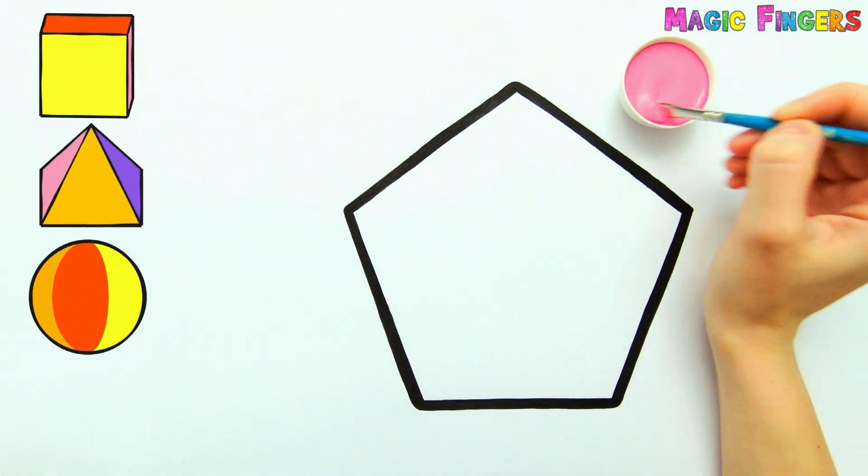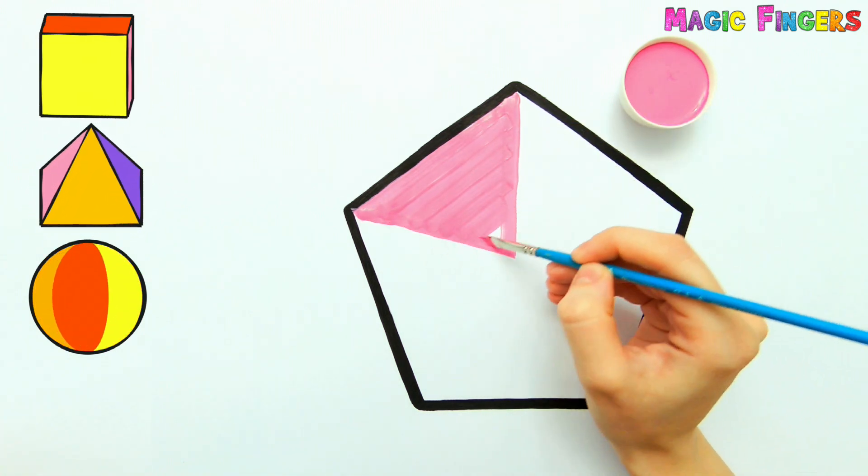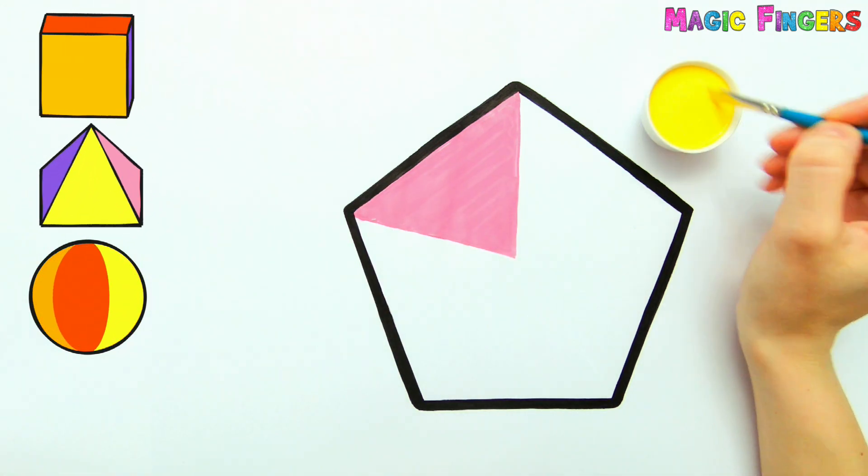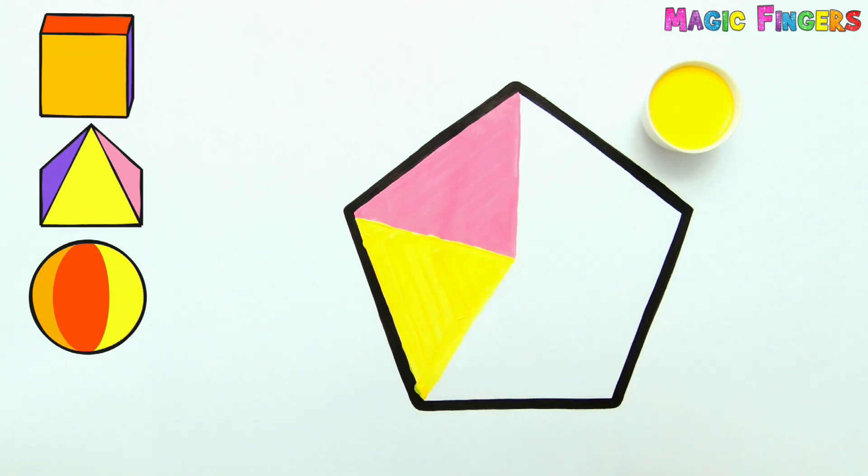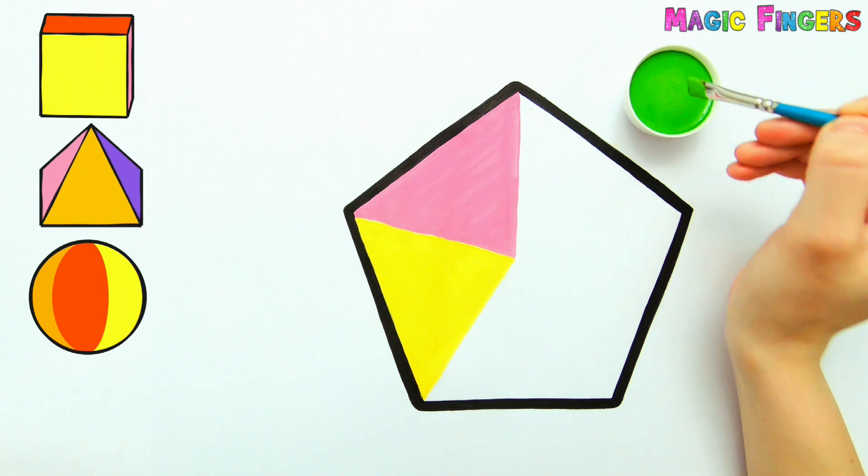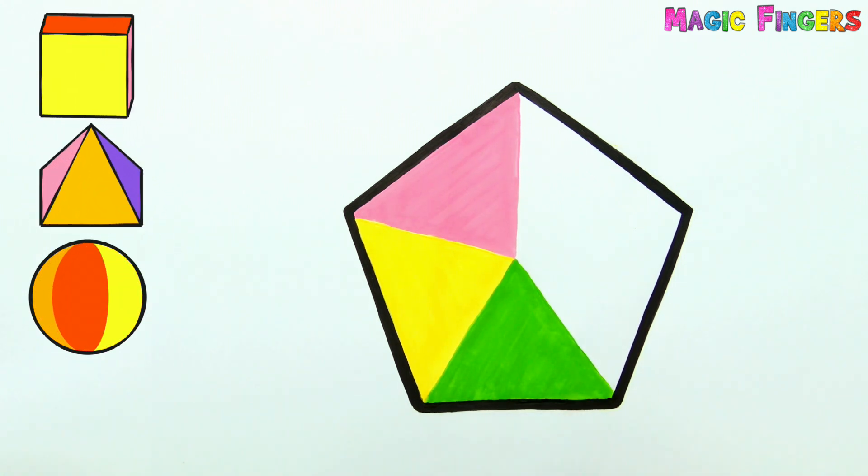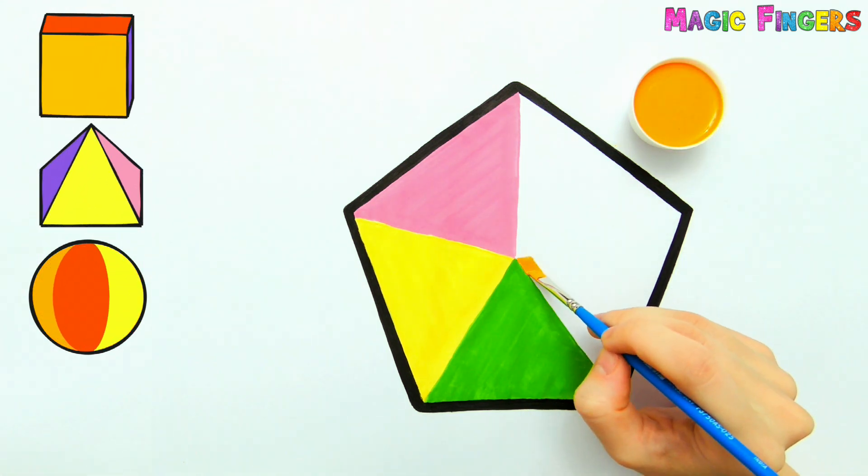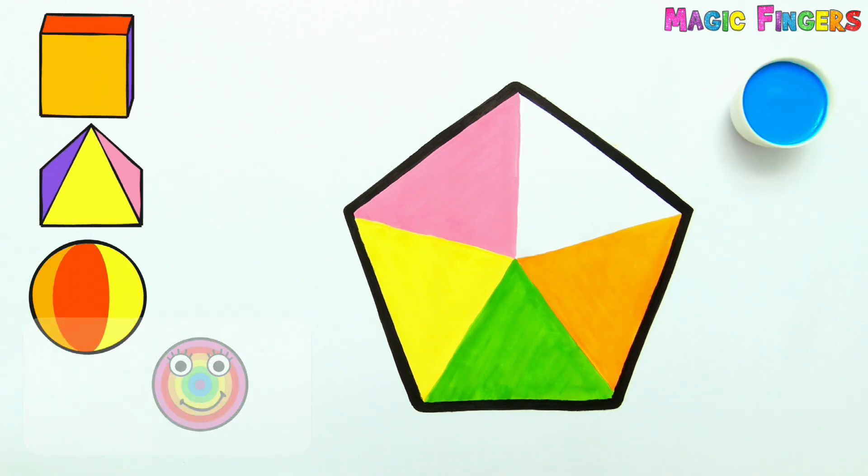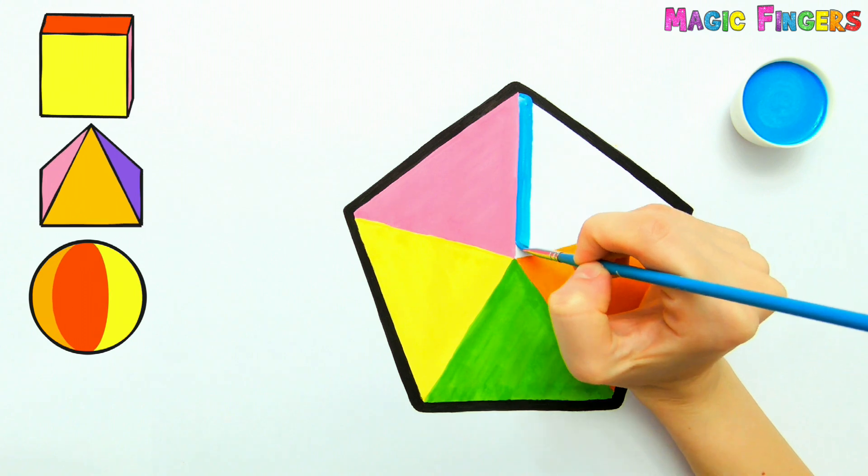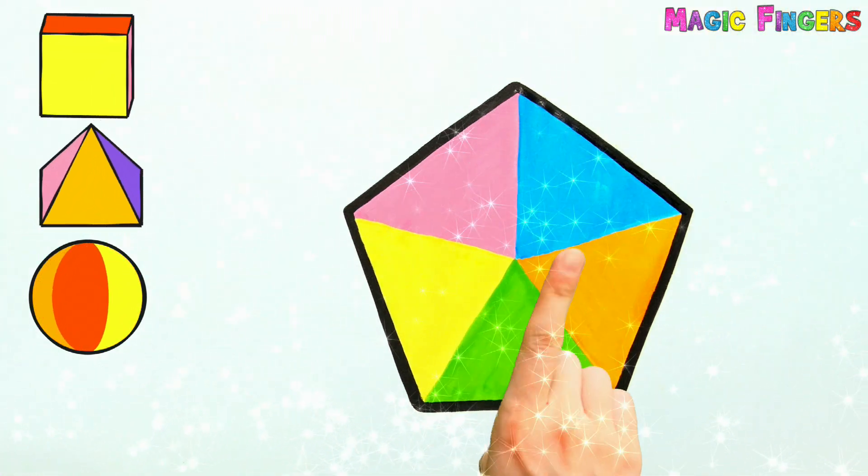I'm drawing a pentagon now. Pink, yellow, green, orange, blue. Magic fingers! Ta-da! The pentagon turned into a pentagonal prism.